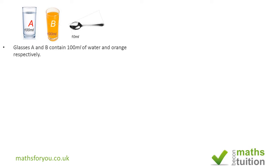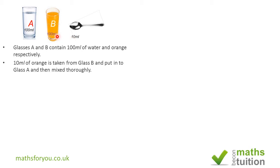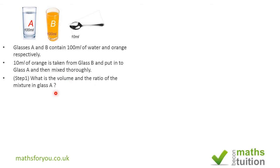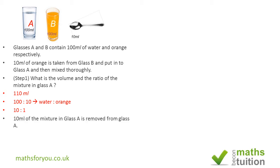Step 1: what is the volume and ratio of the mixture in glass A? In glass A we had water, and we've taken 10 mils of orange from glass B and added it to glass A and mixed it thoroughly. Because we're adding 10 to 100, the volume is now 110 millilitres. The ratio of water to orange is 100 to 10, which simplifies to 10 to 1.